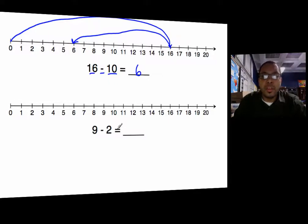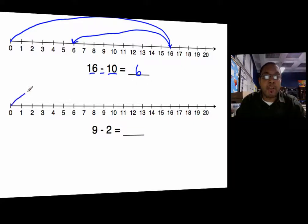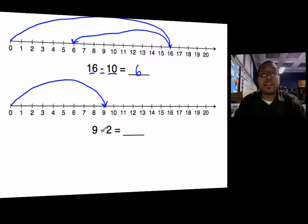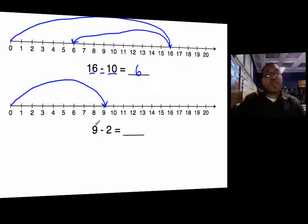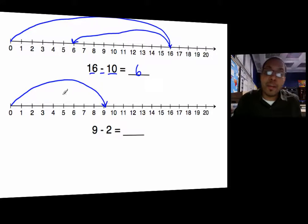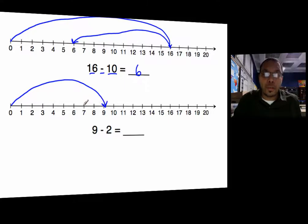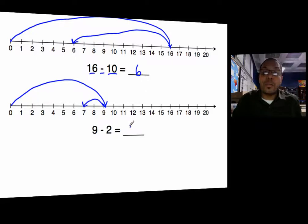The next problem says 9 minus 2. We draw an arrow from 0 to 9 pointing to the right. Then I see the subtraction sign — that means go to the left. To the left, to the left — the sign that you write is subtract. So we go to the left for two numbers, starting at 9: one, two. I draw an arrow from 9 to 7, and I end up at 7. So 9 minus 2 equals 7.